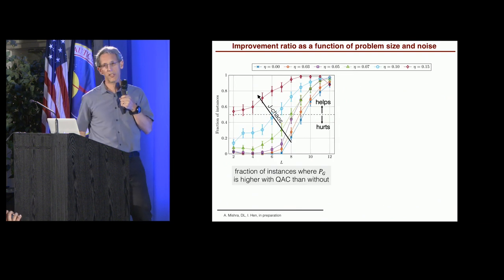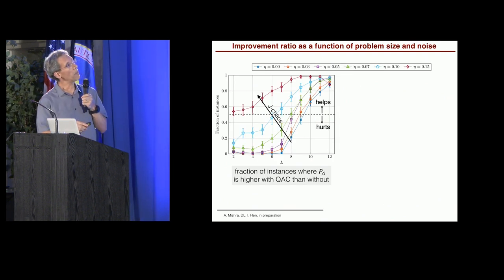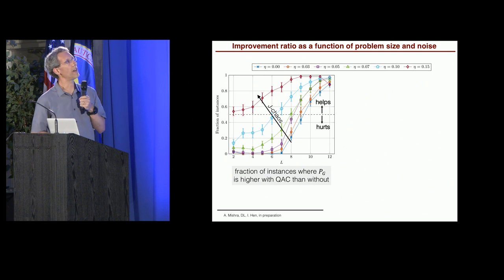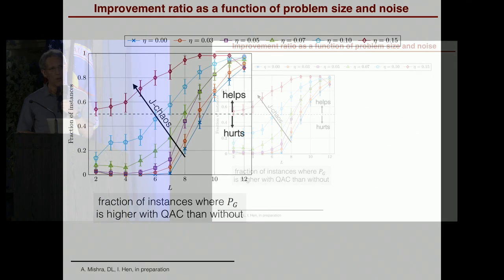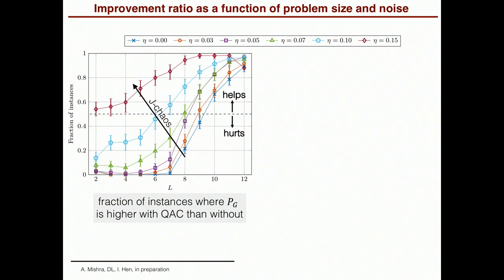Now let's look at it more systematically. So what I'm plotting here is the improvement ratio as a function of problem size and noise. And by the improvement ratio, what I mean is the fraction of instances where the success probability is higher with quantum annealing correction than without it. All right. So at one half where the dotted line is, if we're above this line, then quantum annealing correction helps. It improves the success probability. Below it, it hurts.